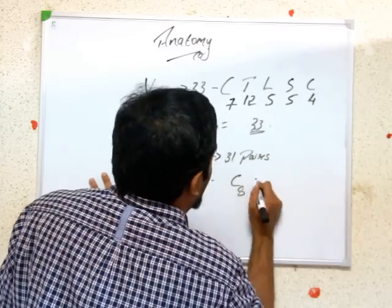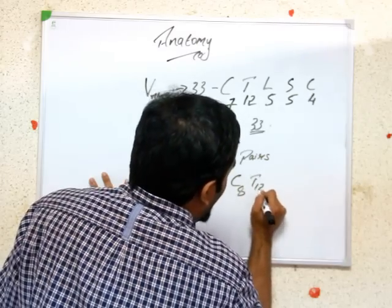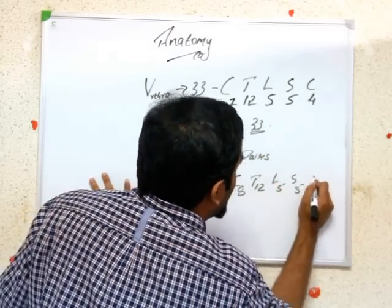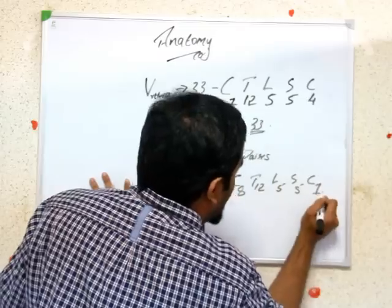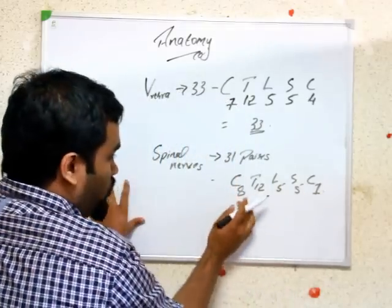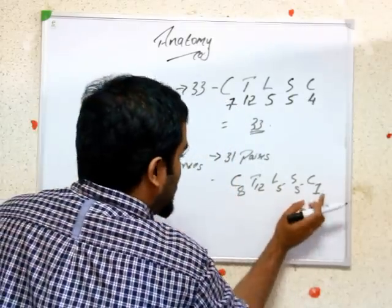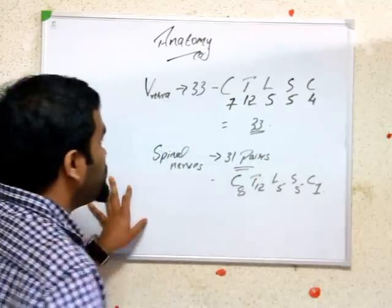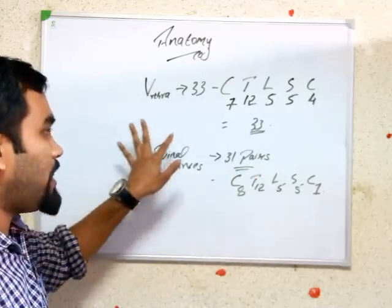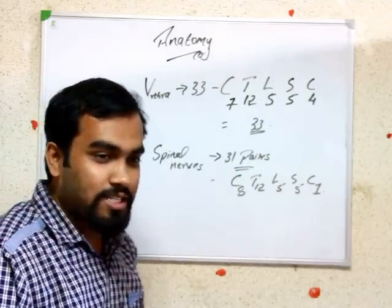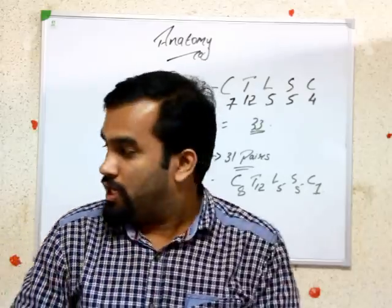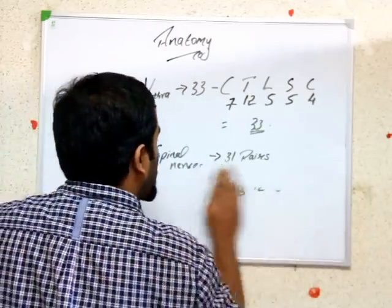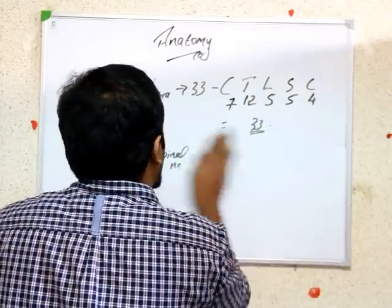The formula for spinal nerves: C8, T12, L5, S5, Co1 — that gives 31 pairs of spinal nerves. And vertebrae we have 33. Memorize that. Now we are moving to the upper limb.